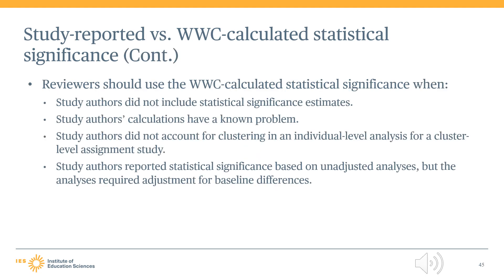Although the WWC generally prefers study-reported p-values and statistical significance for study findings, there are four common scenarios where a reviewer should favor WWC-computed statistical significance. First, when study authors did not include statistical significance estimates. Second, when study authors' calculations have a known problem, such as not applying a required adjustment for baseline differences. Third, when study authors did not account for clustering in an individual-level analysis for a cluster-level assignment study. And fourth, when study authors reported statistical significance based on unadjusted analysis, but the WWC requires analysis adjusted for baseline differences.